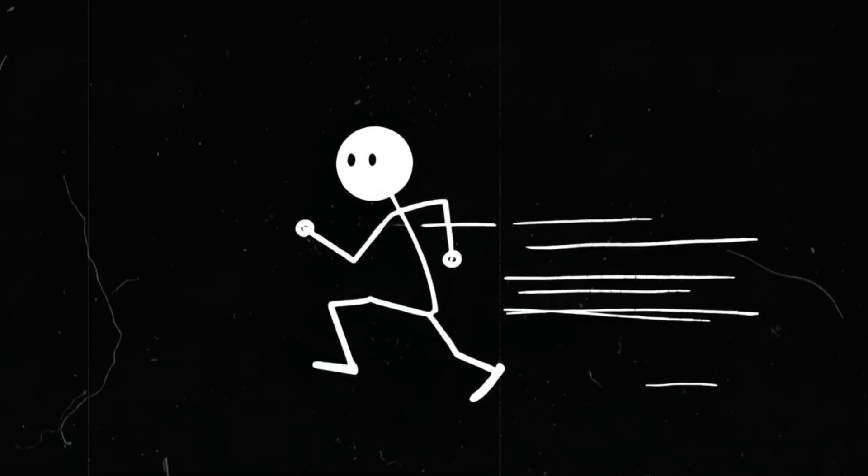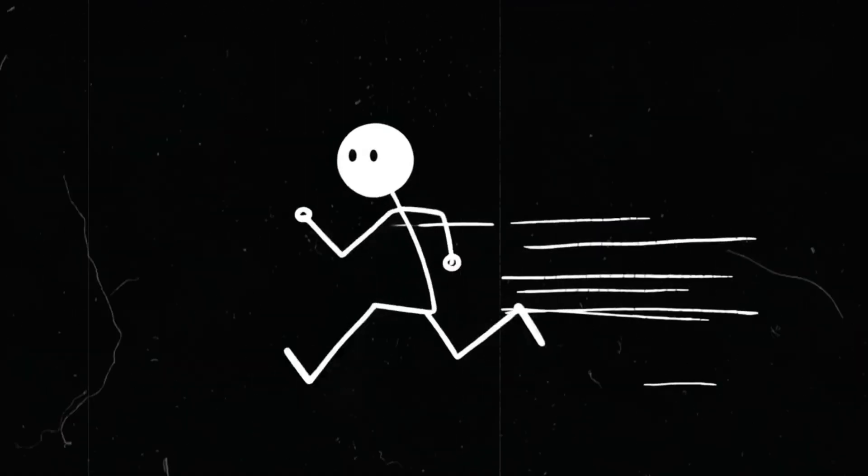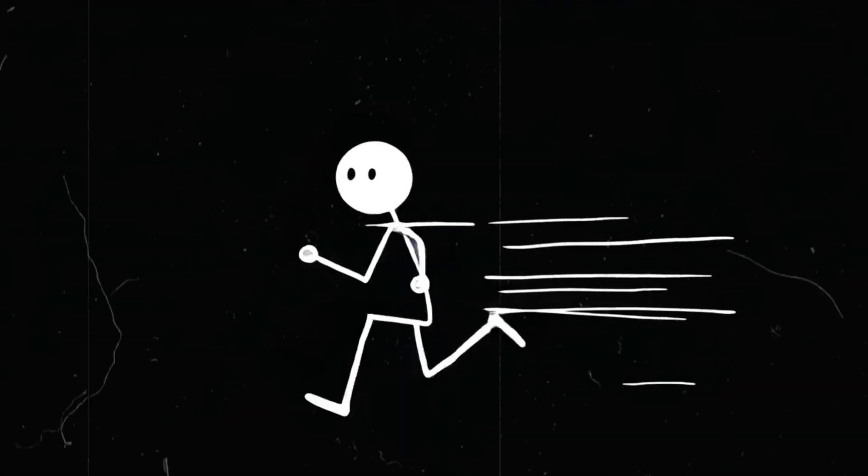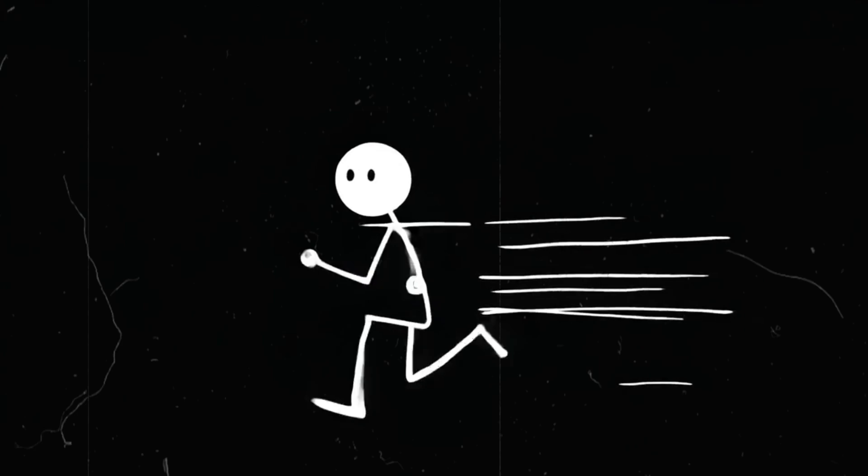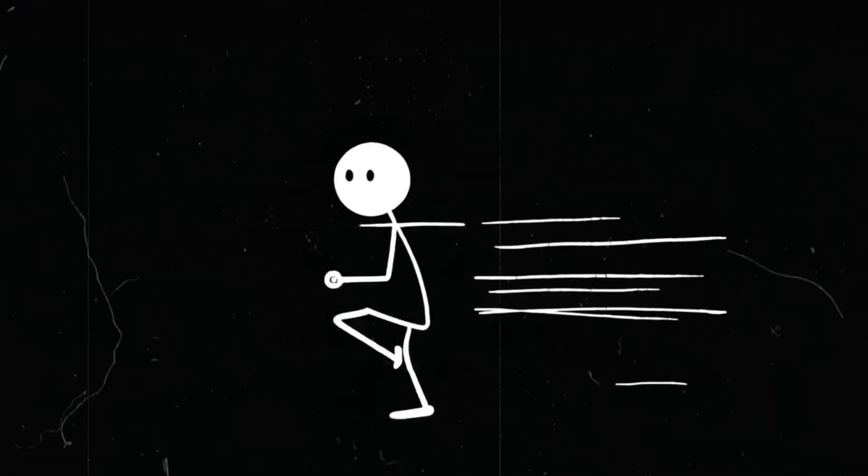Now imagine this. You start running. Not at your usual pace, not even at Usain Bolt's speed of 44.72 kilometers per hour, 27.8 miles per hour. No, this time you're pushing beyond human limits. You're running faster than the planet itself. What happens next?